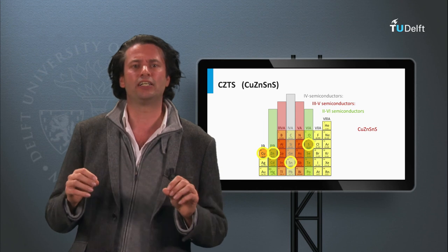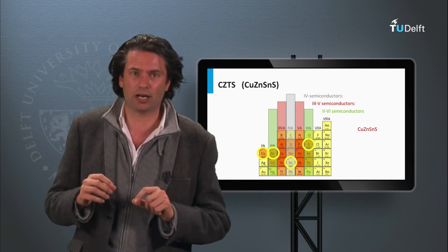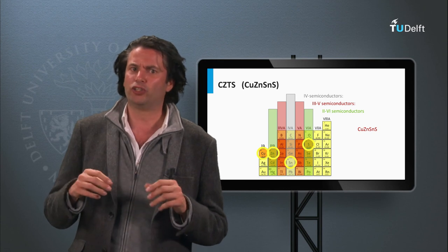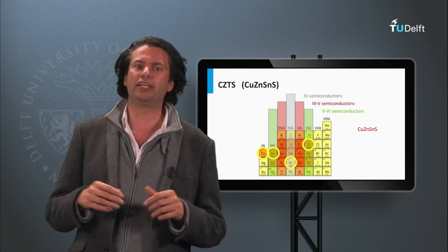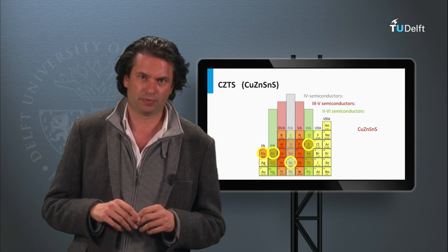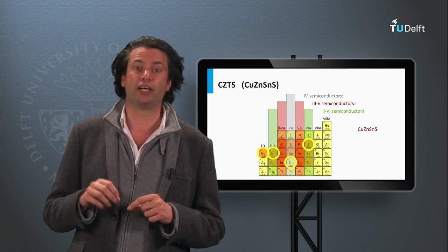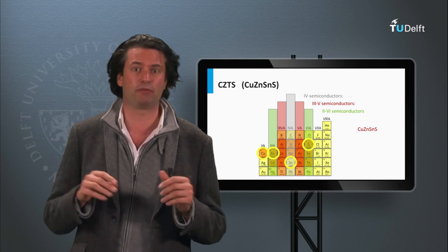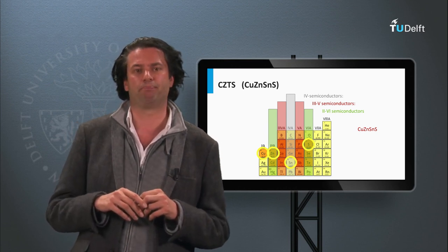CZTS is based on non-toxic and abundantly available elements. The current record efficiencies of CZTS solar cells, on lab scale, is around 11%, as achieved by IBM.